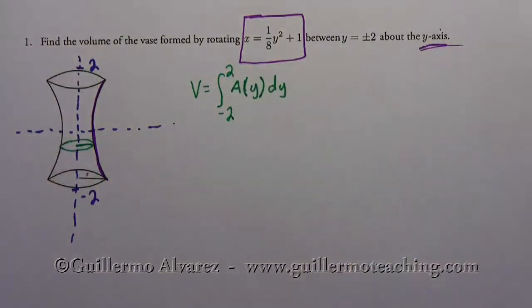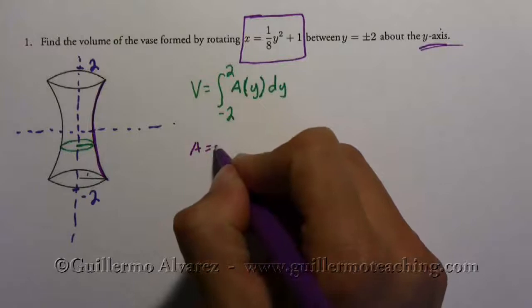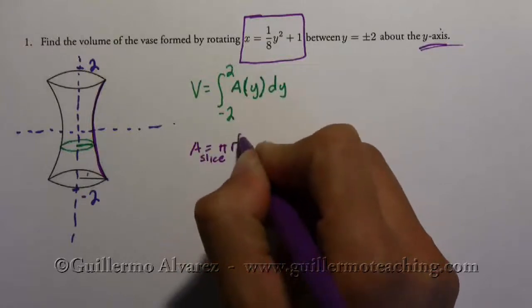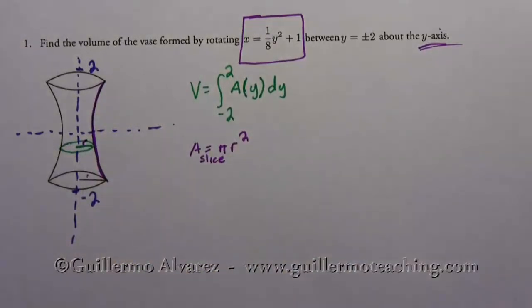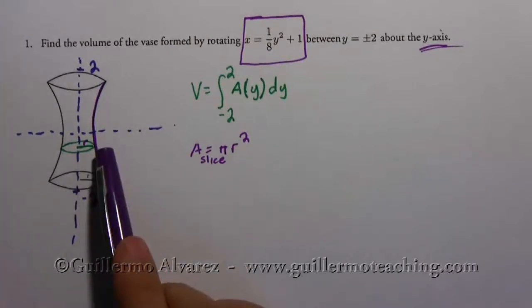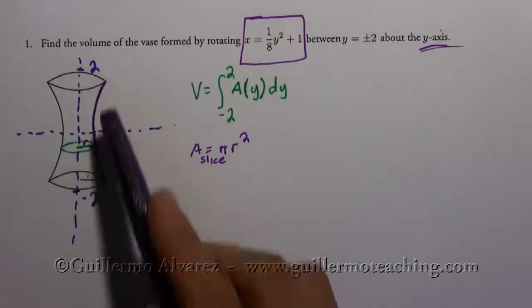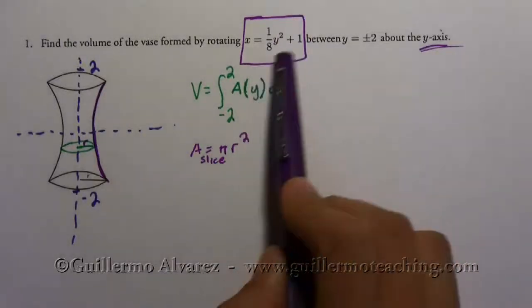Okay, so to find the area, we'll remember that the area equals, the area of the slice equals pi r squared, where r is the radius right here. And so the radius is simply the value of the function, of this equation right here.